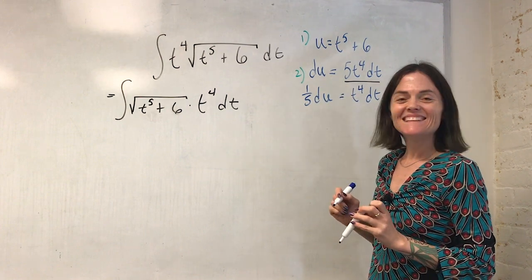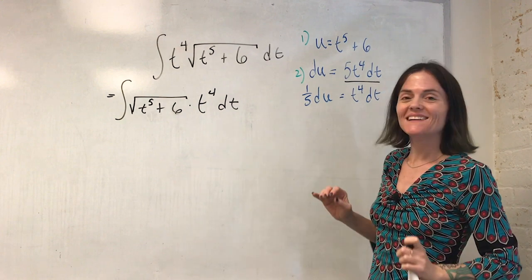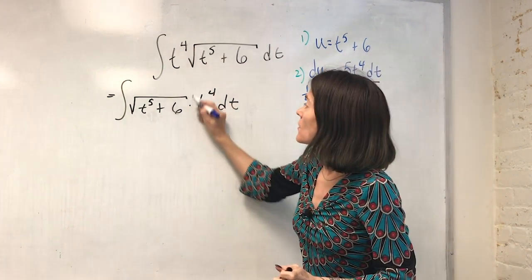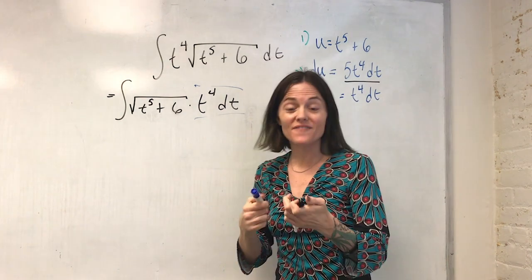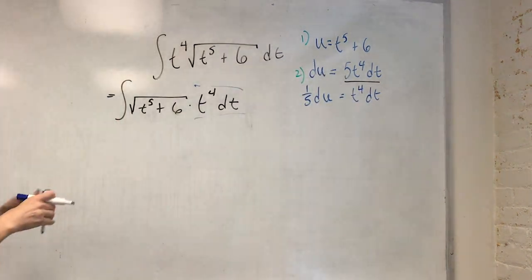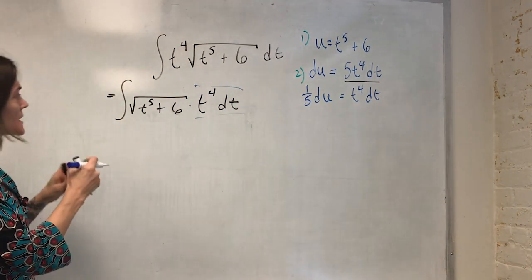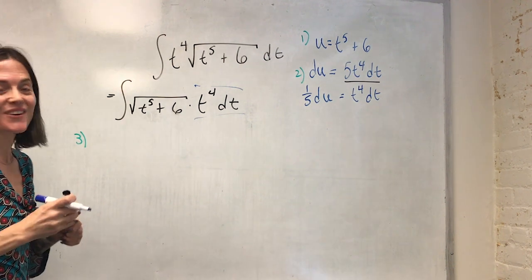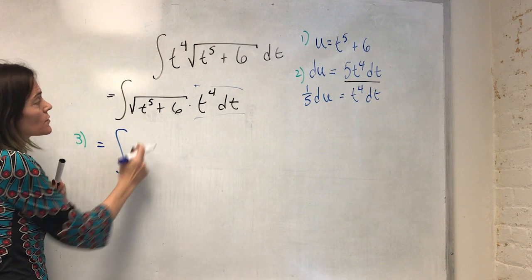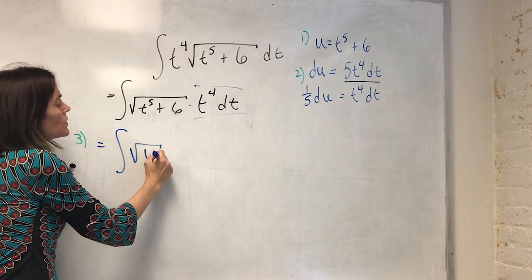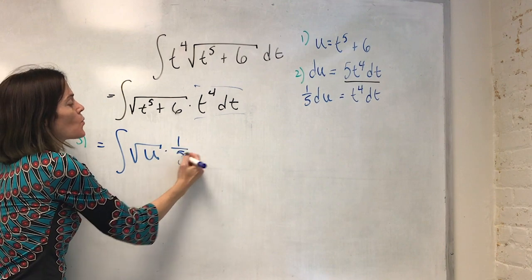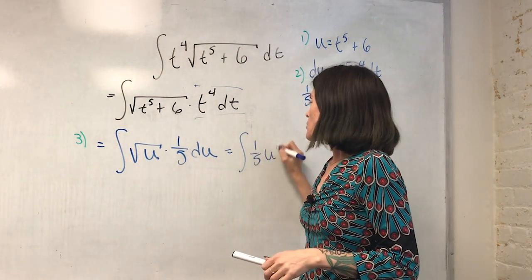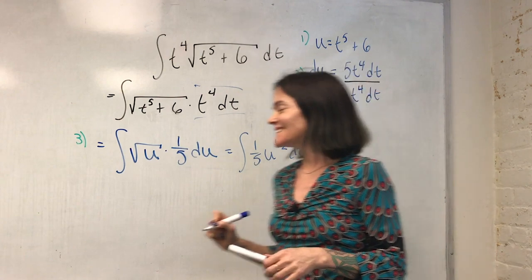So when I go to replace, which is step three, as I mentioned, all of this here, this thing, I will replace with a one-fifth du. So now, step three, I convert everything to an integral of u. This is an integral. This is a square root of u. This is, as we calculated, one-fifth du. Or you might, if you want to write it as a power, u to the one-half du. That's step three.